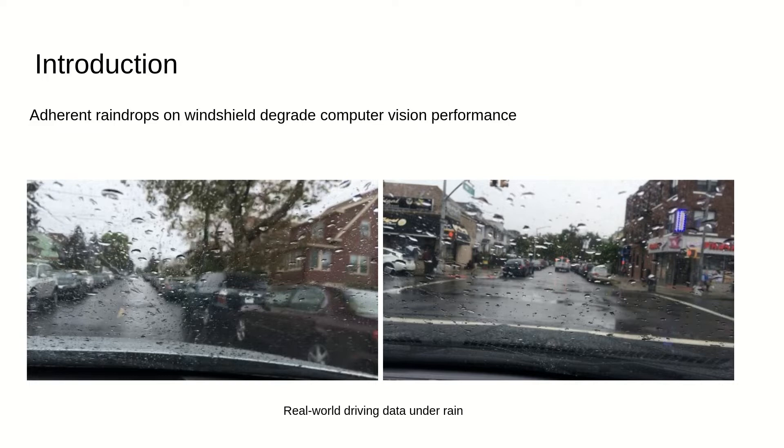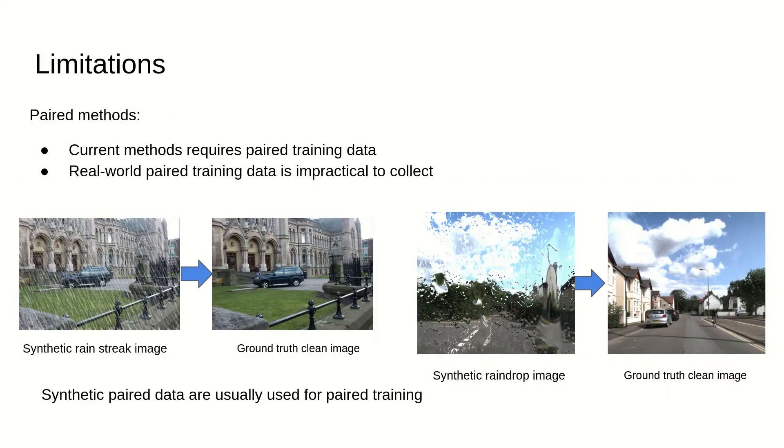In this paper, we propose a framework RainGAN to remove the adhering rain drops. The state-of-the-art rain drop removal models use paired datasets for training. It is not practical to collect paired training data because rain drop images and clean images are mutually exclusive. One solution is to synthesize rain images from clean images to form the paired training dataset. However, the synthetic data distribution is different from the real rain drop data distribution. The models learned from synthetic data are unlikely to perform well on real-world data.